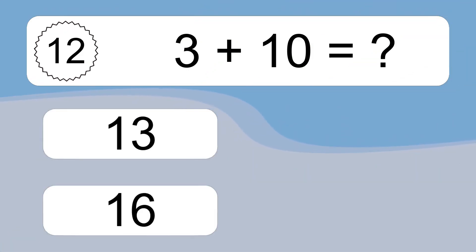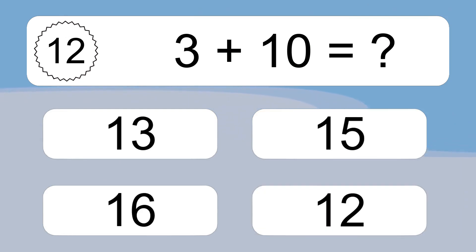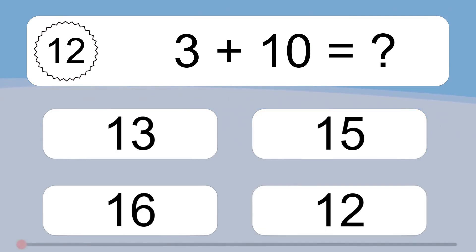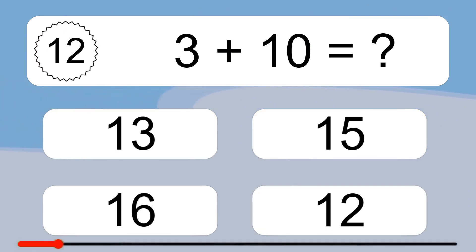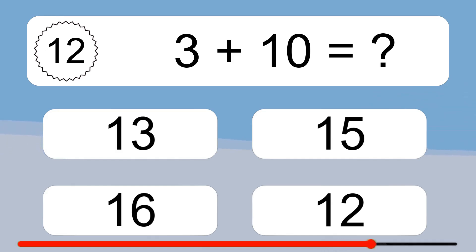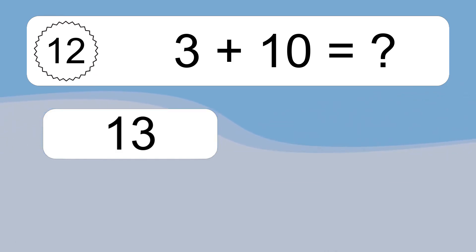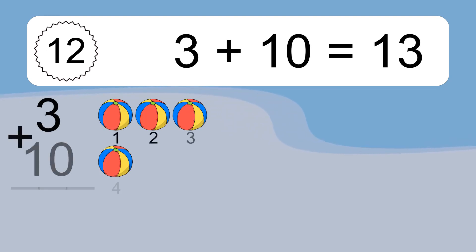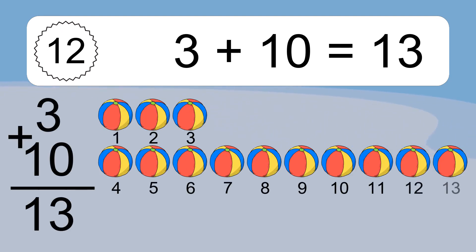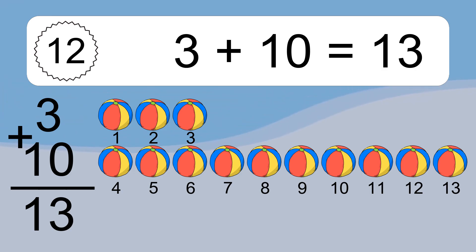3 plus 10 equals what? 3 plus 10 equals 13. Let's count it. 1, 2, 3, 4, 5, 6, 7, 8, 9, 10, 11, 12, 13.